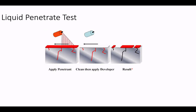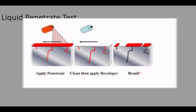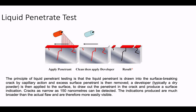Liquid penetrate testing is one of the oldest and simplest NDT methods, where its earliest version dates back to the 19th century. This method is used to reveal surface discontinuities by bleed-out of a colored or fluorescent dye from the flaw. The technique is based on the ability of a liquid to be drawn into a clean surface discontinuity by capillary action. After a period of time called dwell time, excess surface penetrant is removed and a developer is applied. This acts as a blotter that draws the penetrant from the discontinuity to reveal its presence, allowing us to easily find minute cracks on the surface.